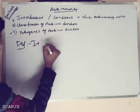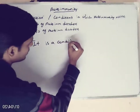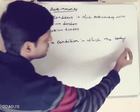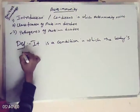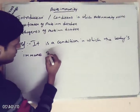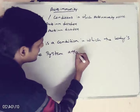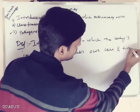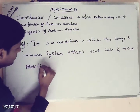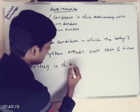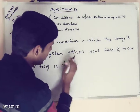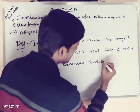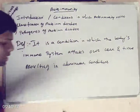Autoimmunity is a condition in which the body's immune system attacks our own cells and tissues, resulting in abnormal conditions. This is called autoimmunity.